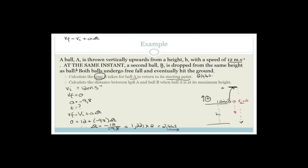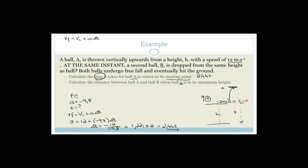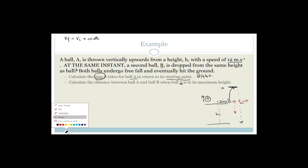Now calculate the distance between Ball A and Ball B when Ball A is at its maximum height. During the 1.22 seconds Ball A has been going up, Ball B has been going down at the same time, so the distance between them is growing. We need to find how high Ball A went and how far Ball B traveled in that same time, then add them together.